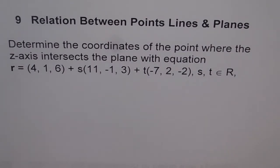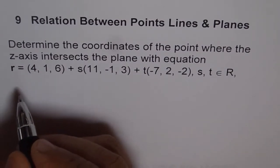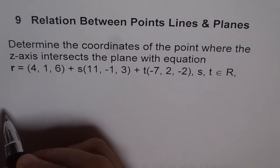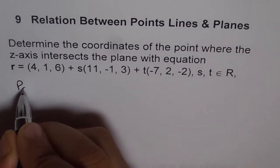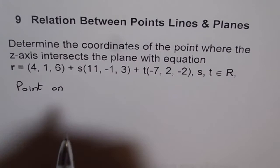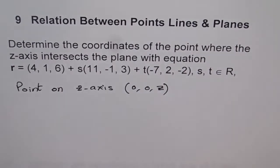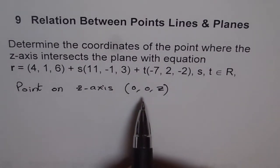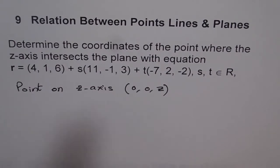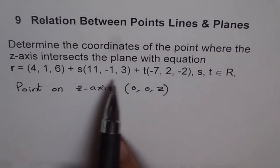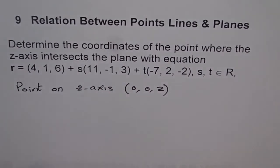So we are trying to understand points and lines and planes with this example. Determine the coordinates of point where z-axis intersects the plane with this equation. Now, z-axis means a point where x and y values will be 0. So a point on z-axis will be (0,0,z). That is a point on z-axis. So we need to find that point of intersection with this given plane. What we can do is write this in parametric form, equate 0s for x and y, then find s and t and then find z.